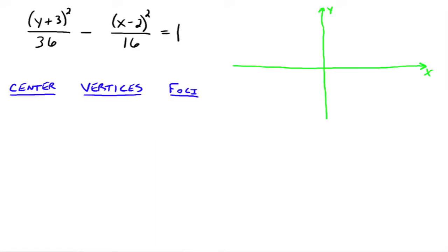This is part three in the study of the hyperbola. Let's try another one. So what's the center? Well, h is 2 and k is negative 3, so the center is (2, -3).